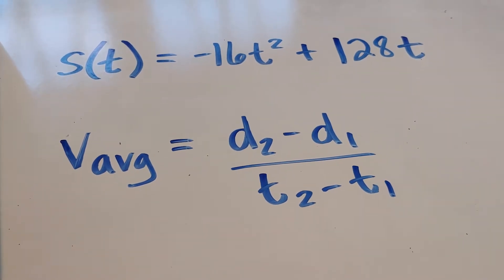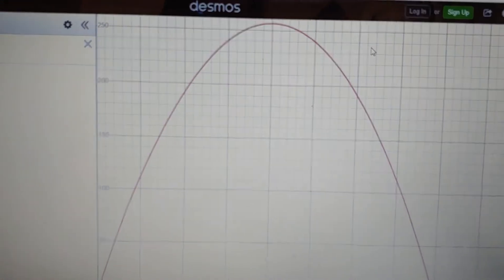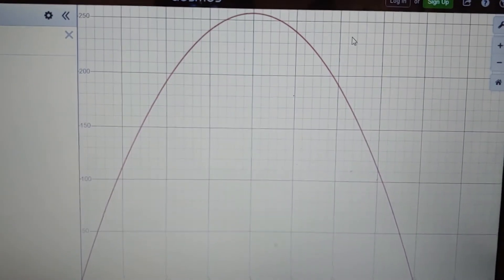So this happens to be the same parabola I graphed earlier in Desmos. What I'm interested in doing is figuring out what the velocity is at any given point.